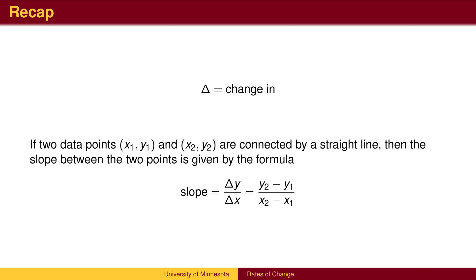To recap: the Greek letter delta represents the change in a quantity. The rate of change, called the slope, compares the changes in the two quantities.